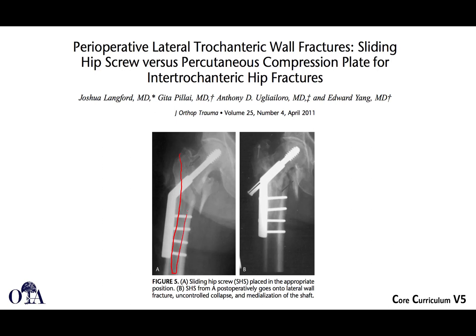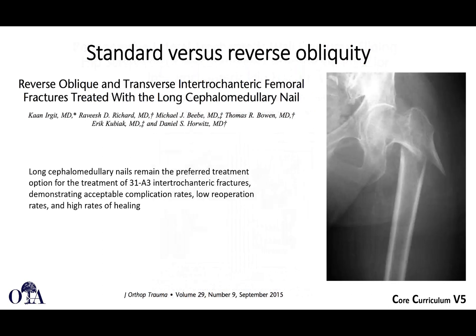With a nail, the implant sits centrally in the bone rather than on the side. When shortening occurs, the fragment can only slide until it contacts the nail, so the nail substitutes for the lateral wall. Whether the lateral wall is competent or not doesn't matter when using a nail — but it does matter with a sliding hip screw.